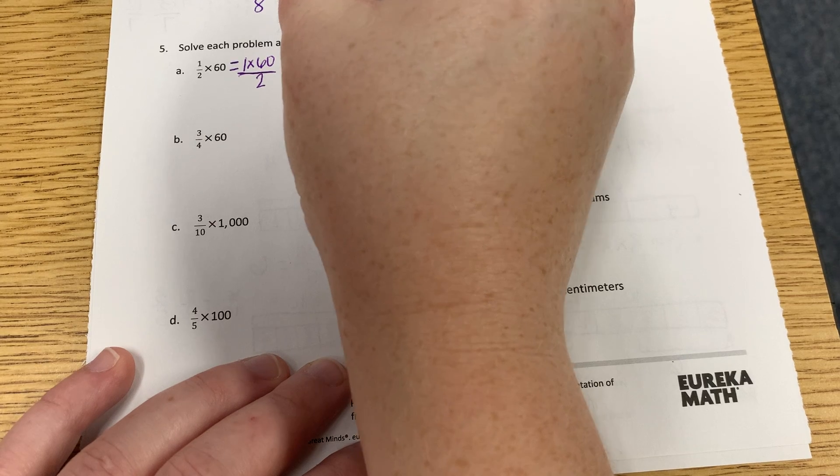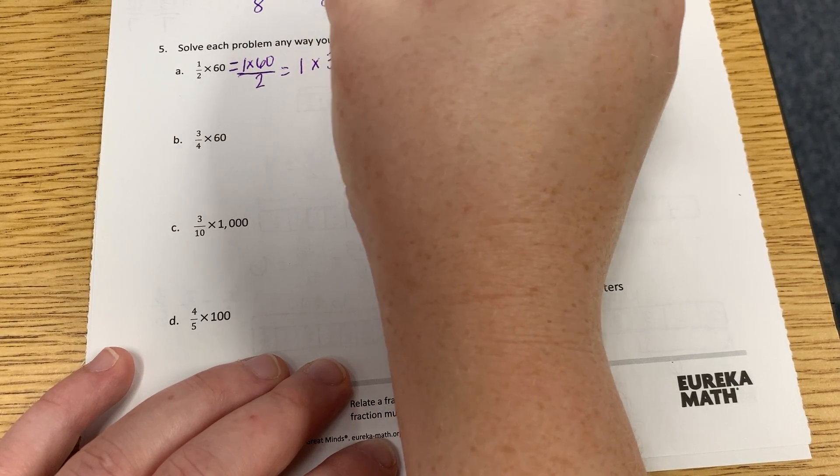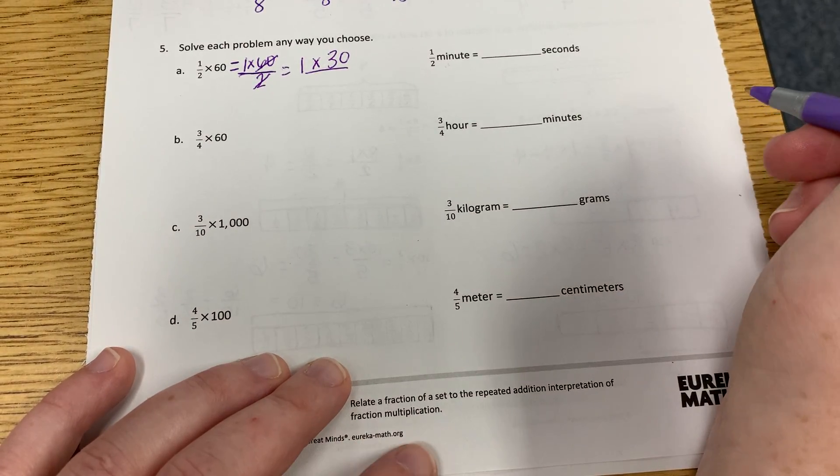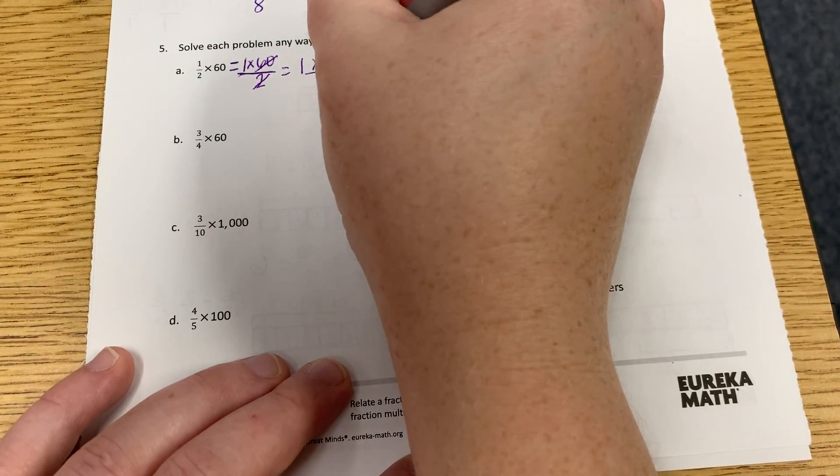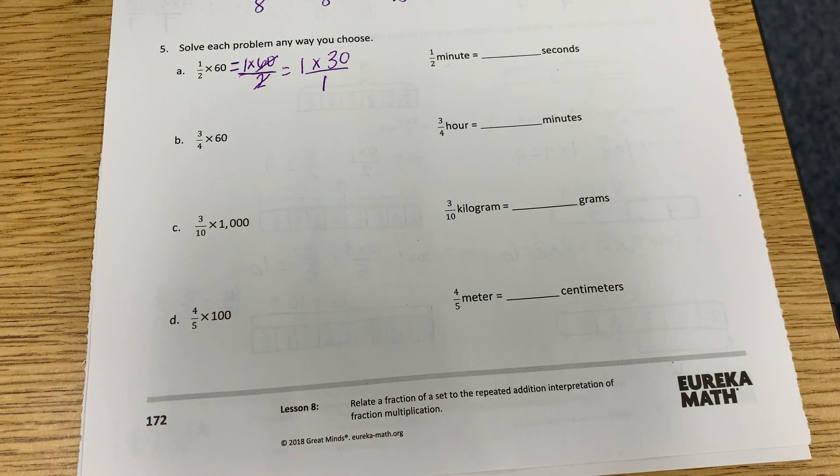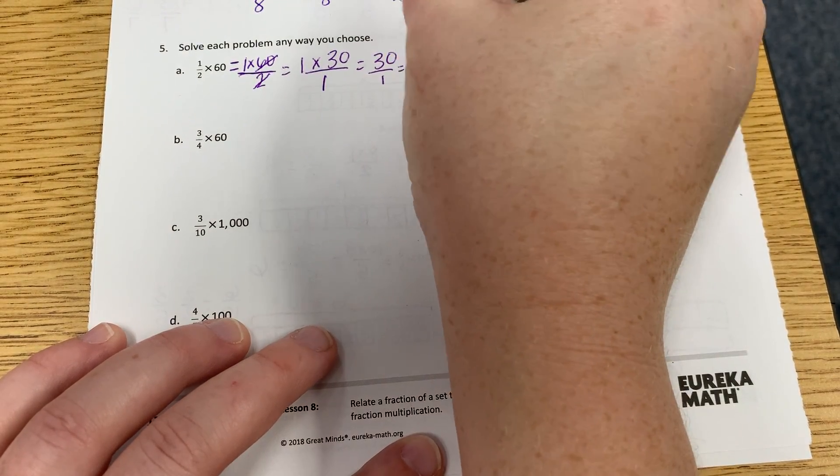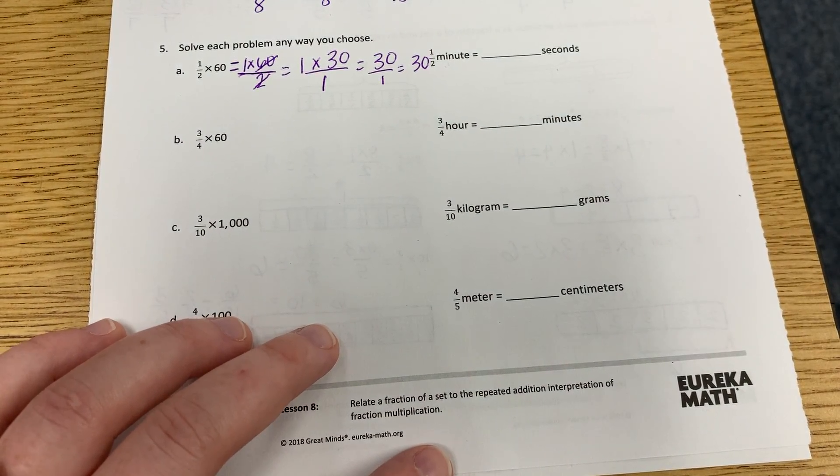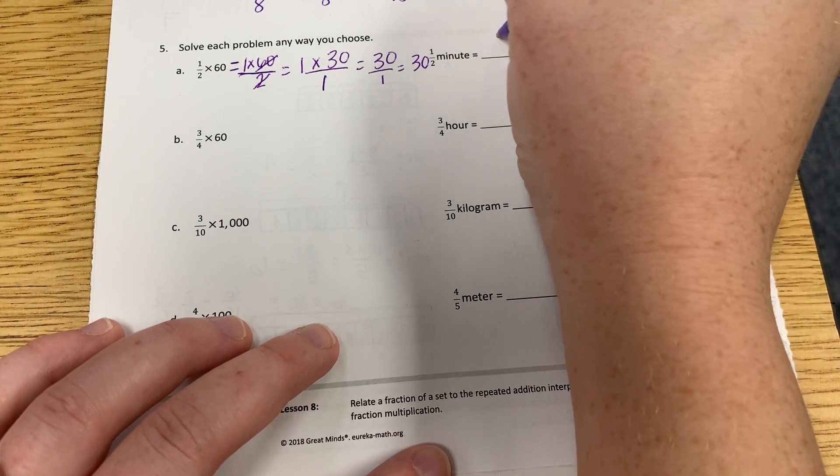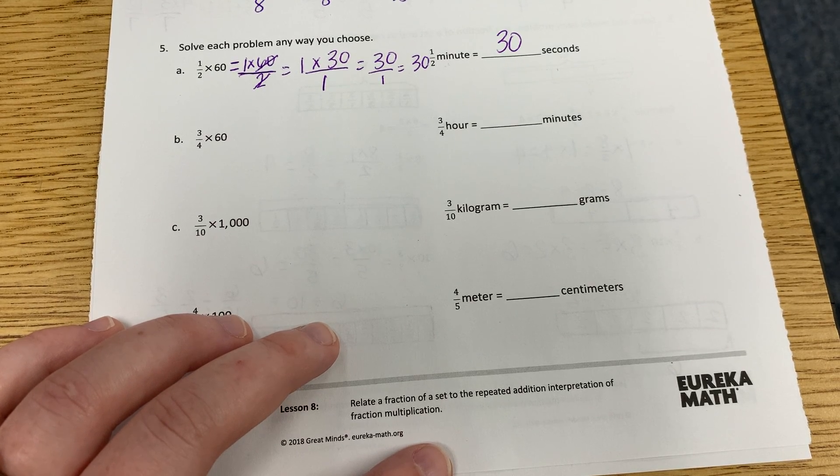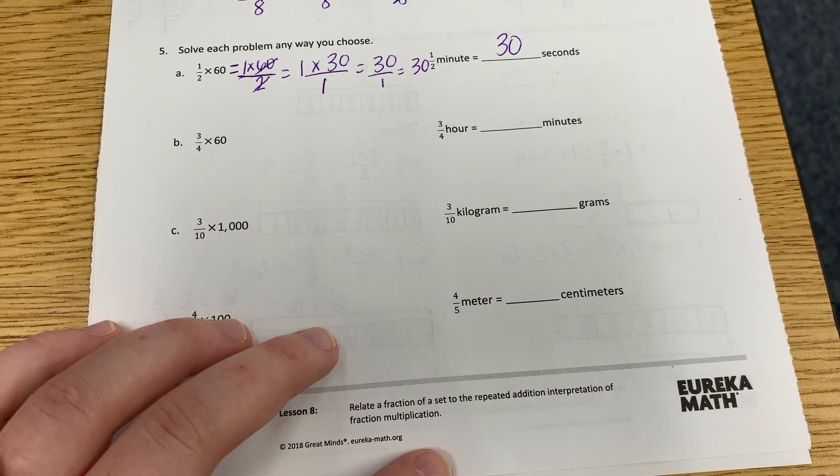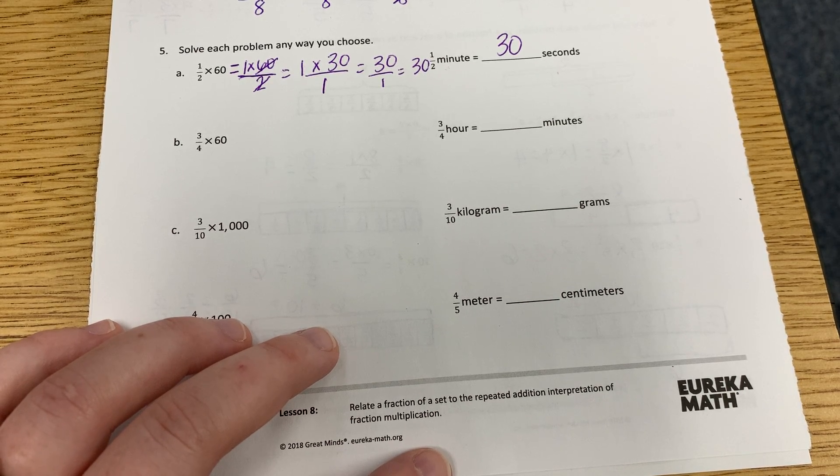So now we have one times 30 over, we took 60 divided by two, which is going to give us a denominator of one, and one times 30 equals 30, and 30 over one is the same as 30. So how many half a minute is how many seconds? 30 seconds. Very good. So like I said, all we're doing here is reducing fractions, making them smaller. So don't panic.